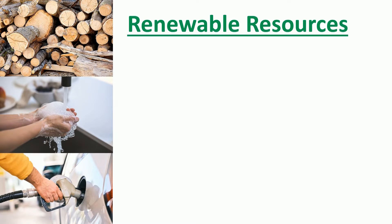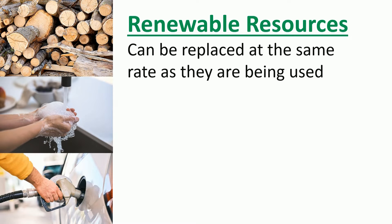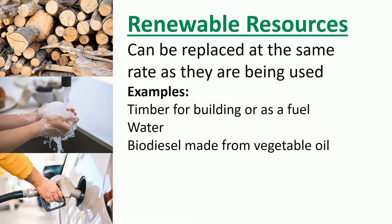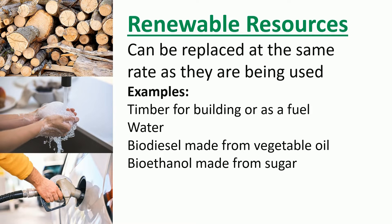Renewable resources, on the other hand, can be replaced at the same rate as they're being used. For example, wood or timber can be used for buildings or as a fuel, and providing we plant as many trees as we're chopping down, we should never run out. Other renewable resources include water, biodiesel made from vegetable oil — because that comes from crops that can be grown time and time again — and bioethanol, which can be made from sugar. Since the sugar grows as a plant and can be replanted, we should never run out.